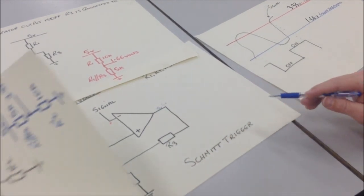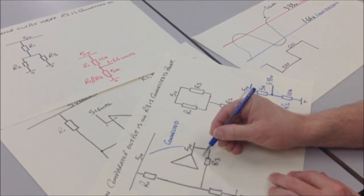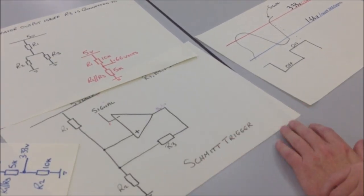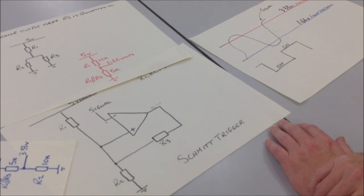So therefore, the comparator cannot change state again until the signal reaches 3.33 volts. And we can tune that threshold by making R3 variable. And that is how a Schmidt trigger works.